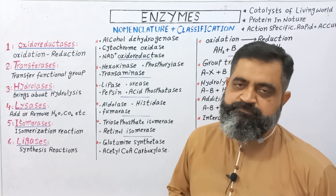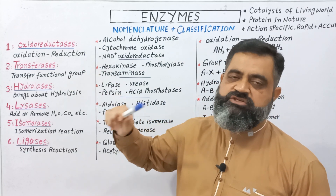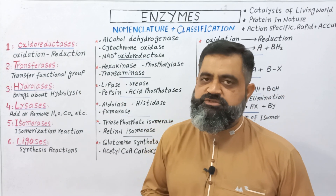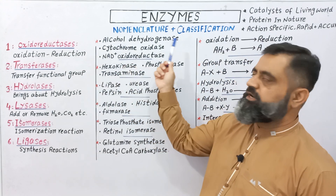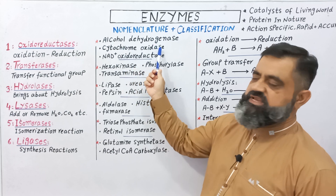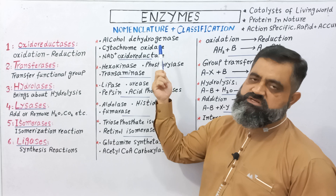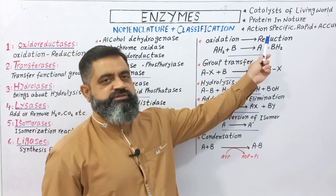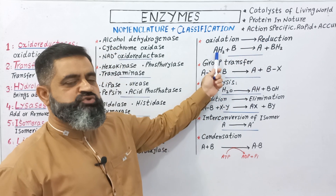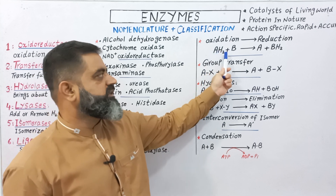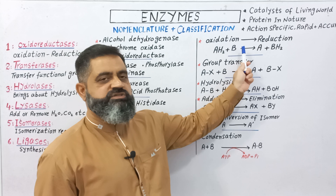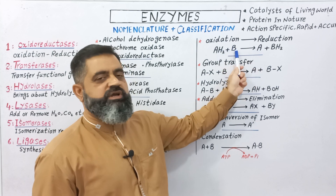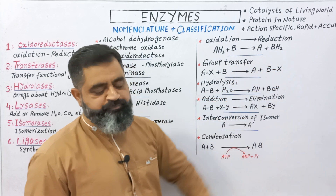The first category of enzymes is oxidoreductases. These are enzymes that catalyze oxidation-reduction reactions, which most commonly take place in living organisms. Examples include alcohol dehydrogenase, cytochrome oxidase, and NAD+ oxidoreductase. How they work: for example, a molecule A-H2 has hydrogen attached, and another molecule B undergoes oxidation-reduction. After the reaction, A is separated and hydrogen attaches to B, forming BH2.